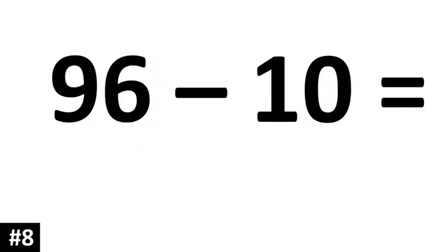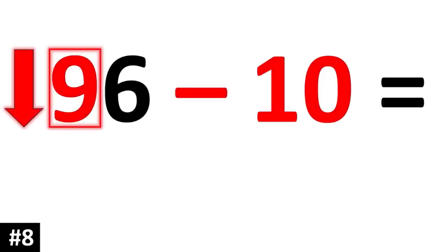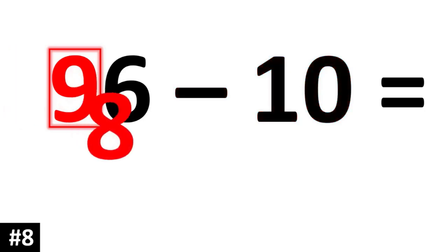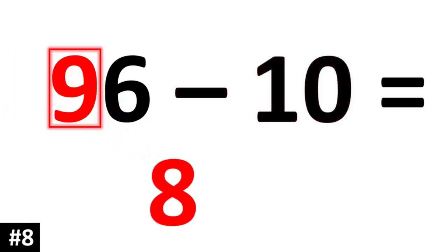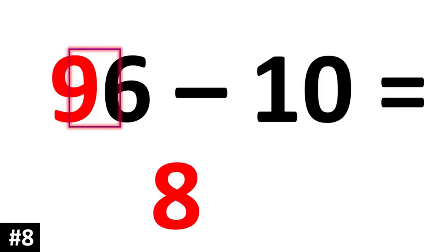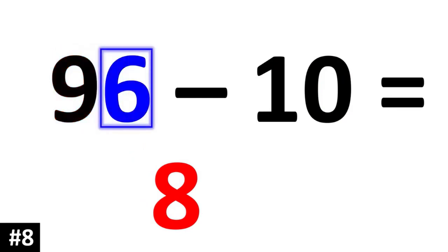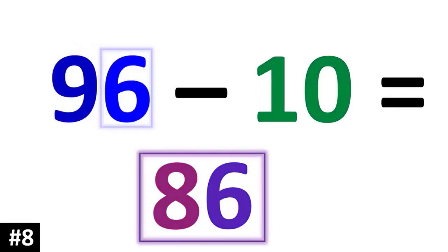How about 96 minus 10? Subtracting by 10 means the tens digit of 9 is going to go down to 8. The ones value stays the same, so 96 minus 10 is 86.